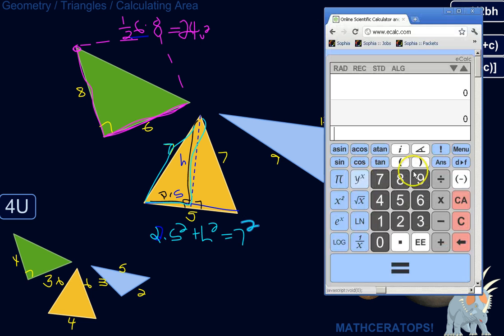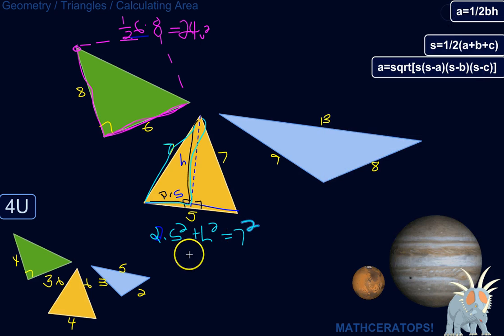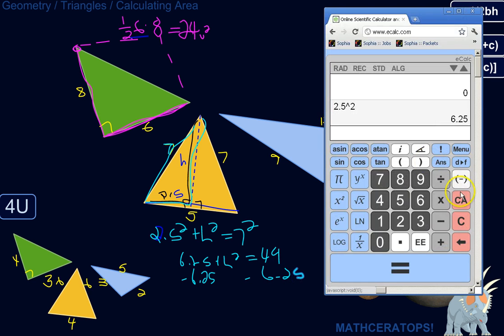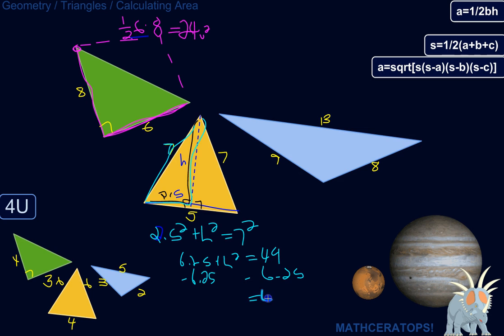So 2.5 squared, what is that? 6.25, 6.25 plus the height squared is equal to seven squared, which is 49. We'll subtract 6.25 from both sides, and 49 minus 6.25, 42.75 is equal to, and all we have left here is the height squared.